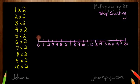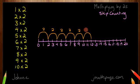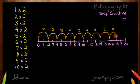So let's start at 0. If I have no 2's, I have 0. If I have 1 two, I've skip counted to 2. If I want to skip count again, I skip 3 and I go to 4. Skipping from 4, past the 5, I get to 6. Past 7, to 8. Past 9, to get to 10. Past 11, to get to 12. Past 13, to get to 14. Past 15, to get to 16. Past 17, to get to 18. And one more — so 18, past the 19, to get to 20.